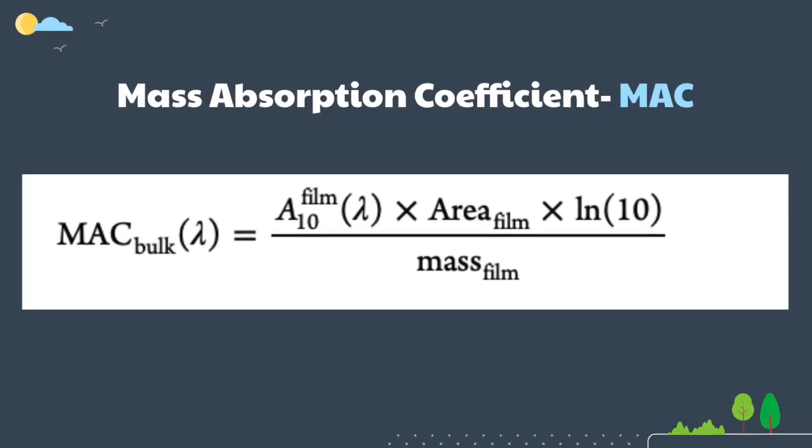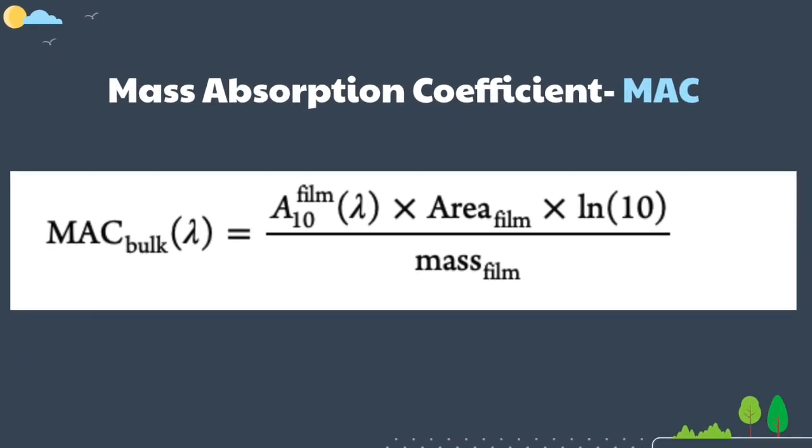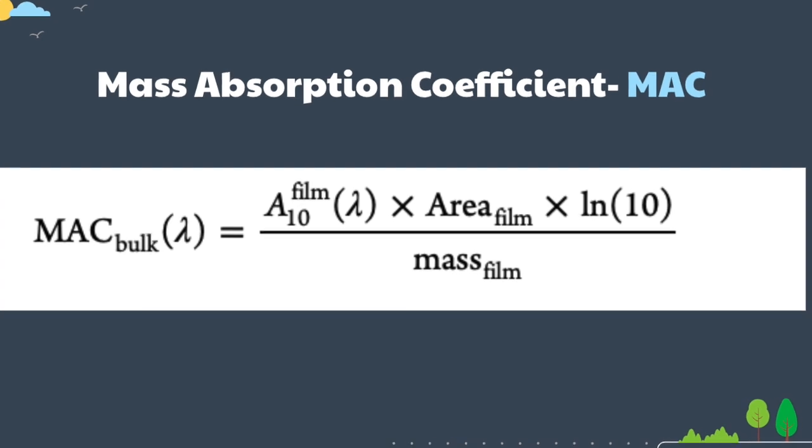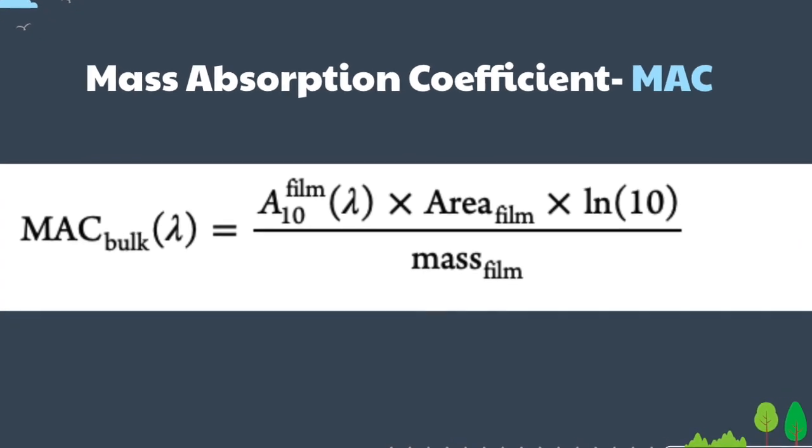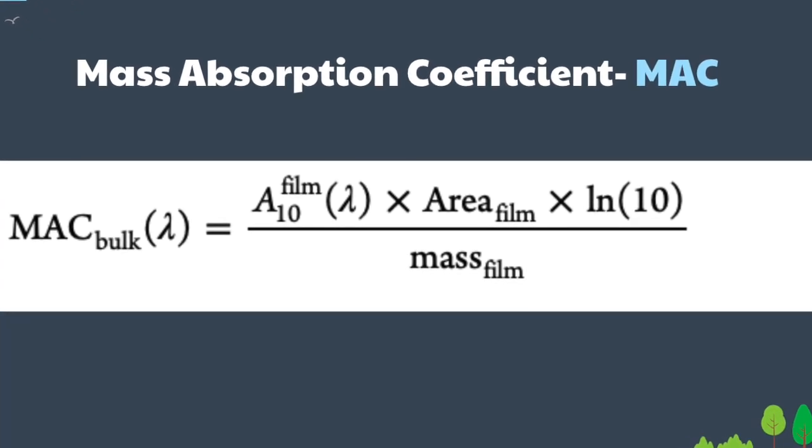The efficiency of absorption of solar radiation can be quantified with the help of mass absorption coefficients, or MAC, which can be calculated from the measured absorption spectra of BBOA.